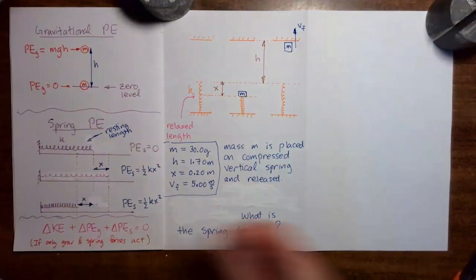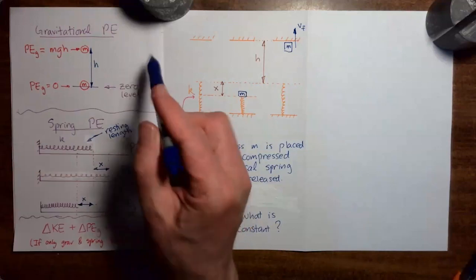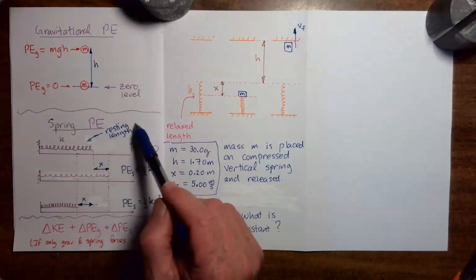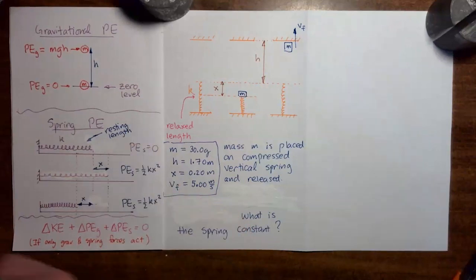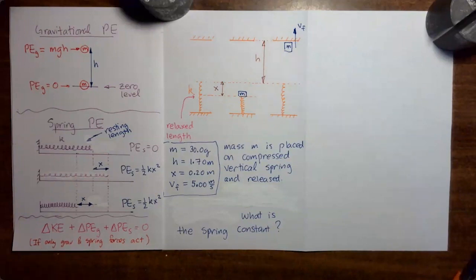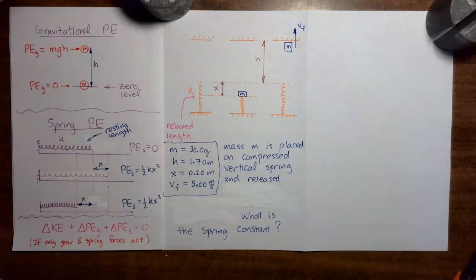At this point in the course, I have introduced you to both the gravitational potential energy and the potential energy stored in a compressed or extended spring, and I've shown you the formulas we use to compute those potential energies. We have also learned that if we have a process where only conservative forces act, then the change in kinetic energy plus the change in potential energy is equal to zero. In this class, the only conservative forces we encounter are the gravitational force and the spring forces.